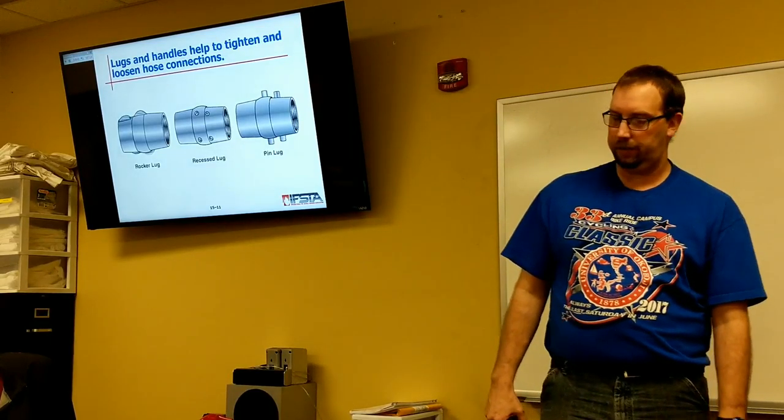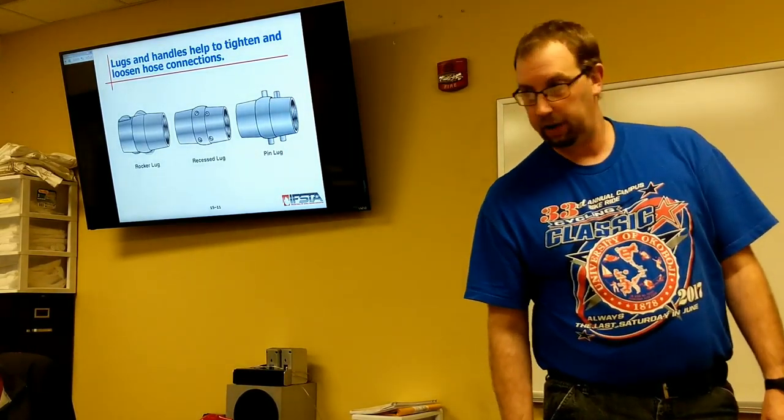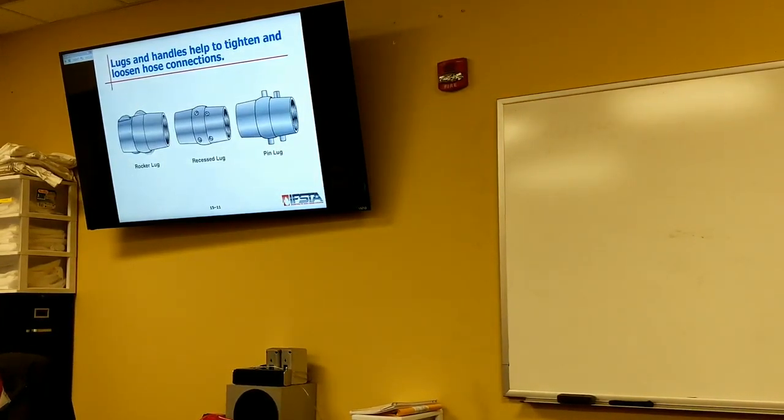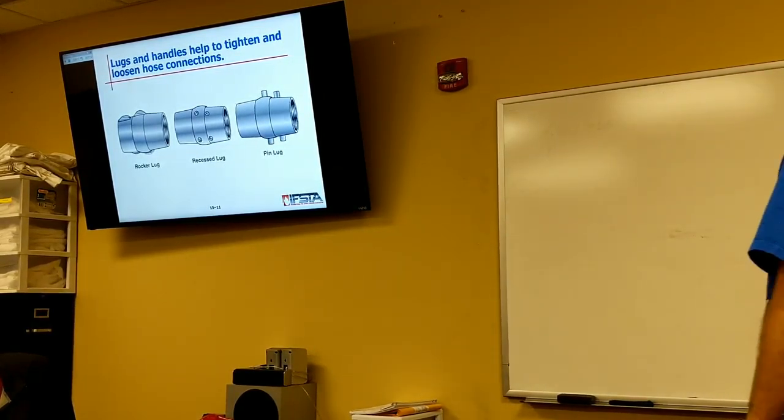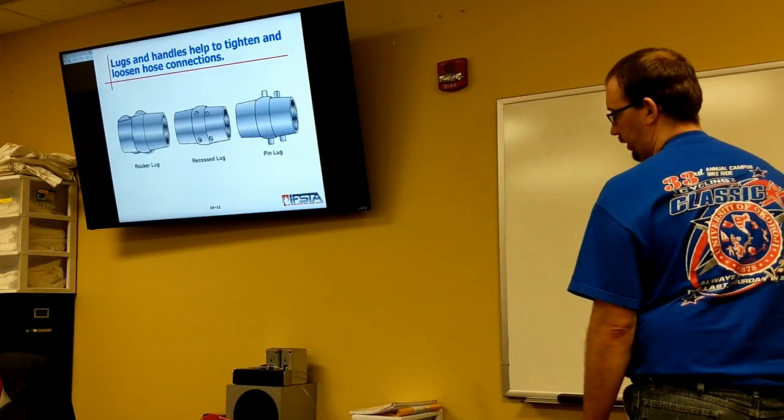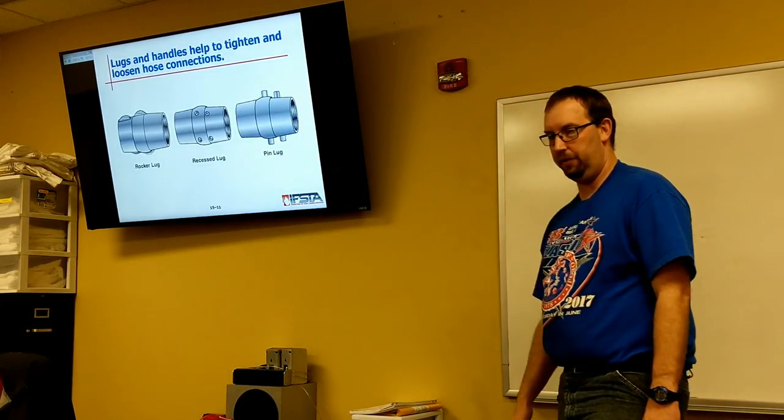Different kind of outside connections or the parts on the outside that we need to know about. We have the rocker lugs. Rocker lugs are the most common, especially in the newer style hose. Those are the ones that our hydrant wrenches and our spanner wrenches connect to.